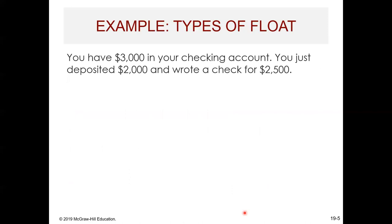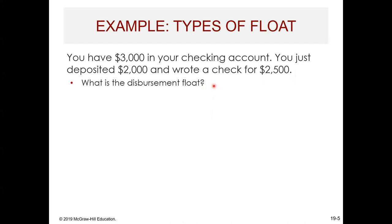We can combine these two to get our net float — it's the disbursement float plus the collection float. Here's a little example. You've got $3,000 in your checking account today. You just received $2,000 and deposited it today. And you wrote a check today for $2,500. The disbursement float is $2,500 — that's the outstanding check that hasn't gone against our bank balance. The collection float is $2,000 — we've received a check in the mail that hasn't cleared the bank yet.